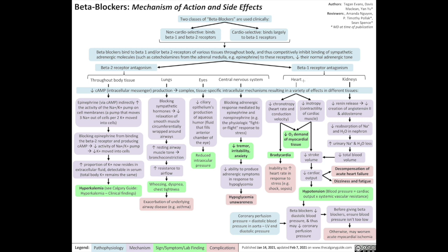Beta 1 receptor antagonism mostly affects the heart and the kidneys. In the heart, beta 1 receptor antagonism reduces the chronotropy — the heart rate — and the conduction velocity of the heart. It also reduces the inotropy, the contractility of cardiac muscle. Both effects lead to a reduced demand for oxygen by the myocardial tissue.